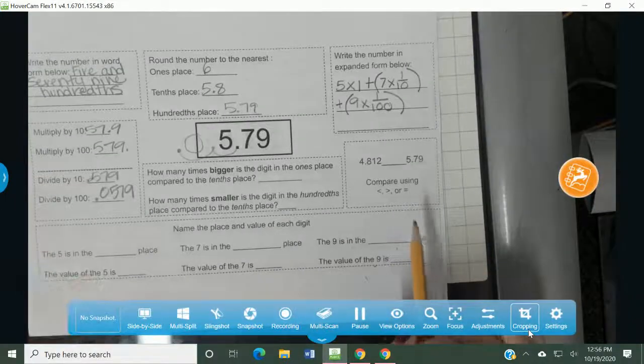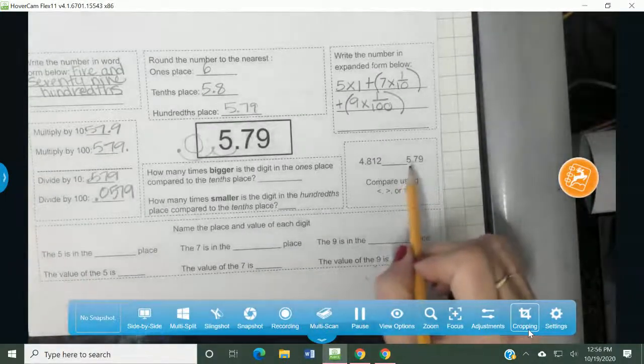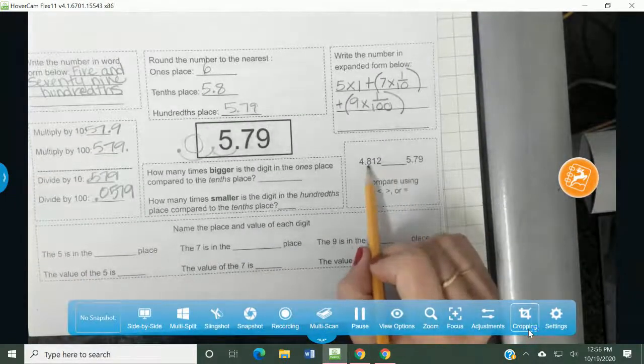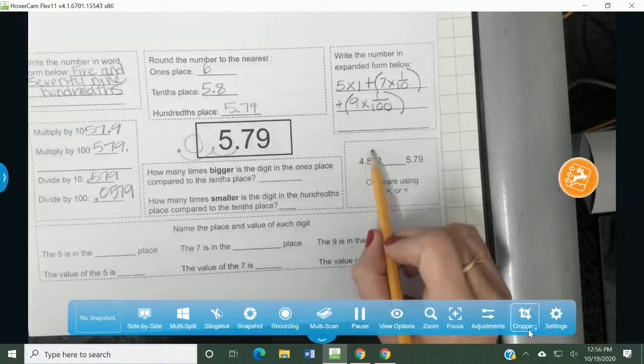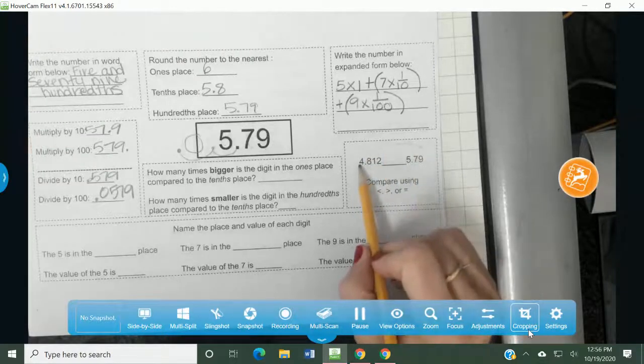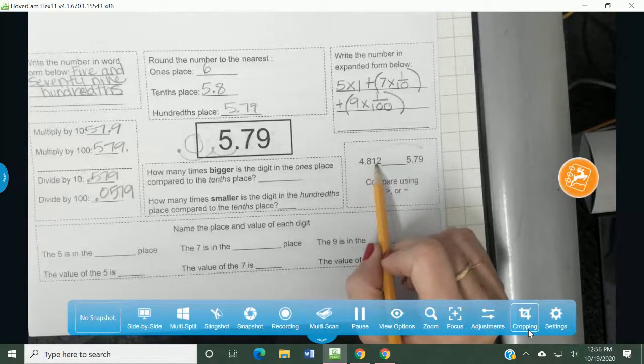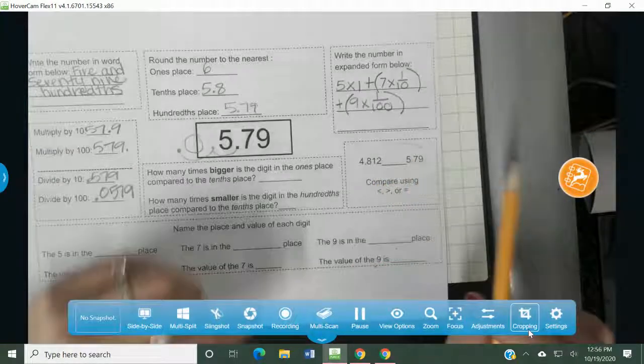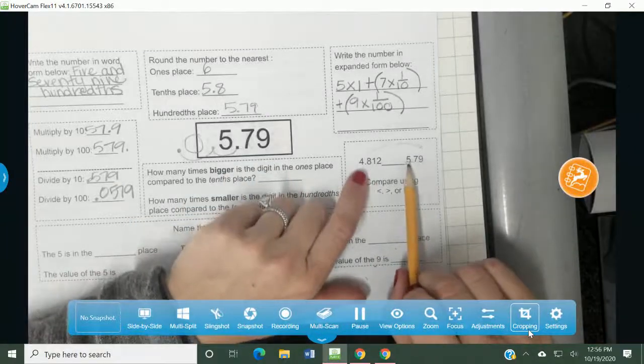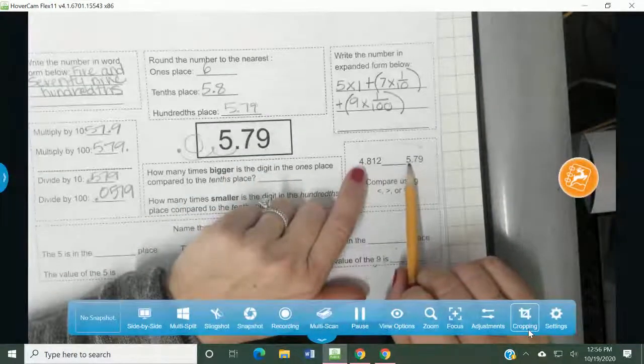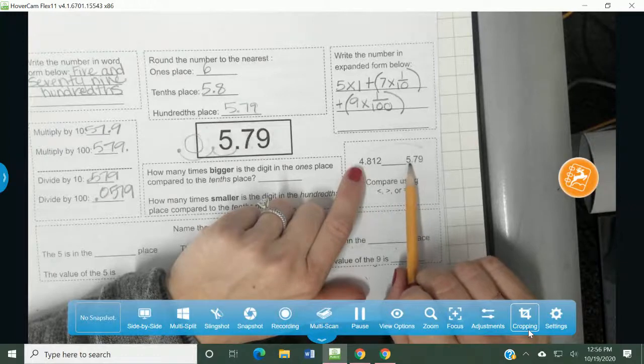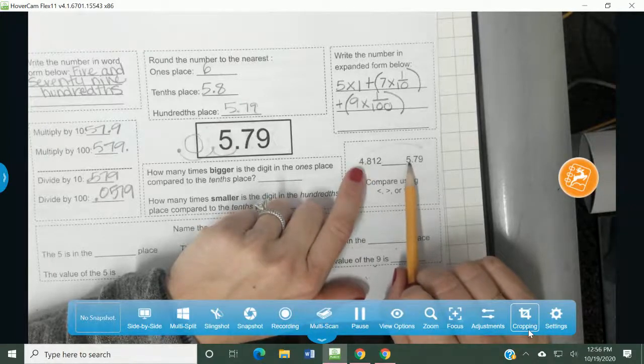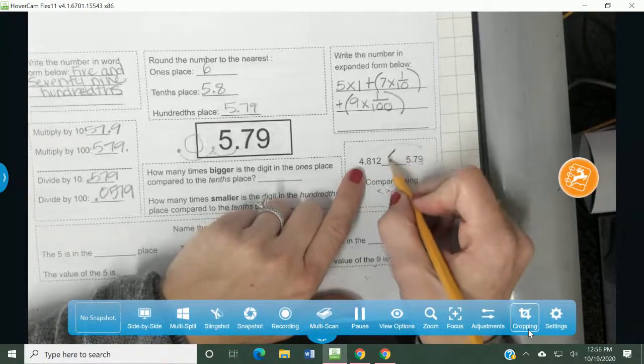Let's jump over here and compare it. I already wrote in the decimal for you, and we're going to compare it to this decimal. Remember, we read this left to right. Four and eight hundred twelve thousandths is what compared to five and seventy nine hundredths. We can only compare digit by digit. These are both sitting in the ones place. This is a four. This is a five. I know that four is smaller than five, so my symbol is going to say less than.